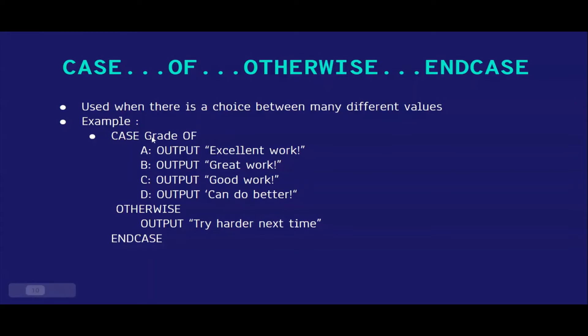If the grade is A, it would output excellent work. If it's B, it would output great work. If it's C, it would output good work. And if it's D, it would output can do better. And if it's none of these from A to D, it will just output try harder next time.